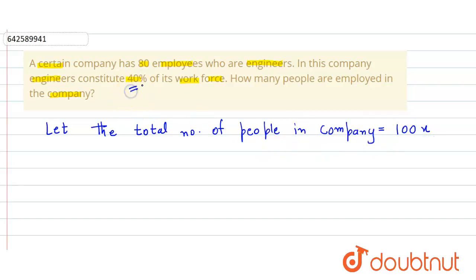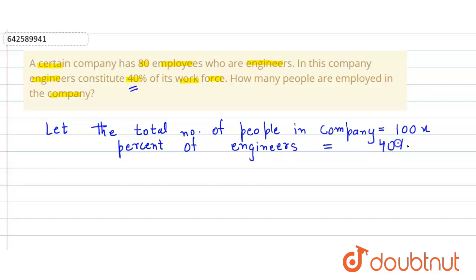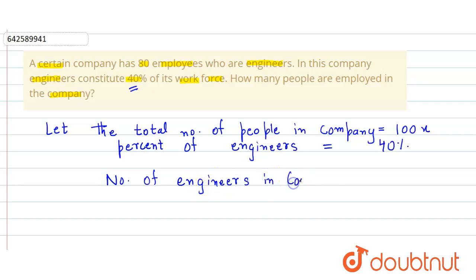It is given that the percent of engineers is 40 percent. So the number of engineers in the company in terms of x will be equal to 40 percent of the total number of employees, which is 100x. So it is 40 percent of 100x.